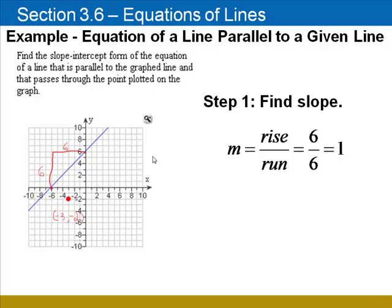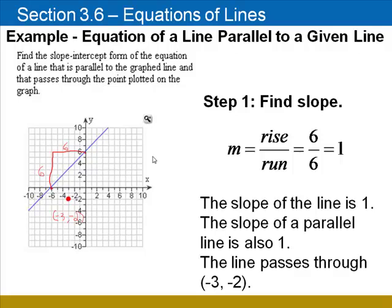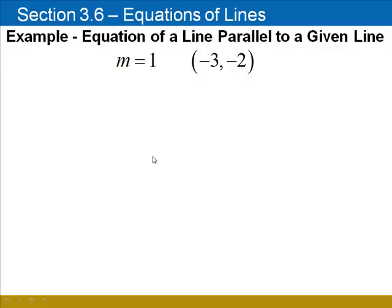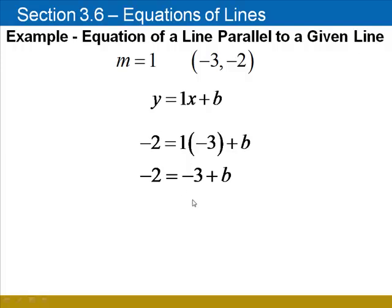So, I need to find the equation of a line whose slope is 1, that passes through the point negative 3, negative 2. I'm going to substitute 1 for m, negative 3 for x, and negative 2 for y. First, 1 for the slope. Substitute the x and y coordinates. 1 times negative 3 is negative 3. To solve this equation for b, I add 3 to both sides. And I find that b equals 1.